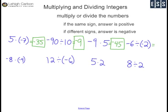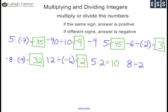Negative 6 divided by negative 2: 6 divided by 2 is 3. They were both negative — same sign — so my answer is positive 3. Negative 8 times negative 4: 8 times 4 is 32. They're both negative — same sign — so my answer is positive 32. 12 divided by negative 6: 12 divided by 6 is 2. 12 is positive, negative 6 is negative, so my answer is negative 2. 5 times 2 is 10 — both positive, so my answer is positive. 8 divided by 2 is 4 — both the same, so my answer is positive 4.